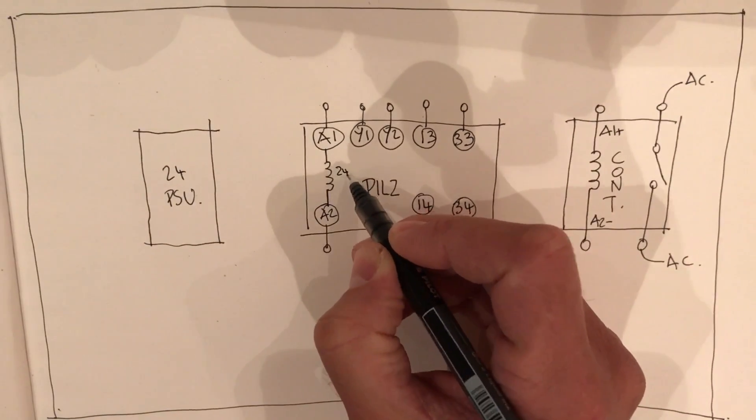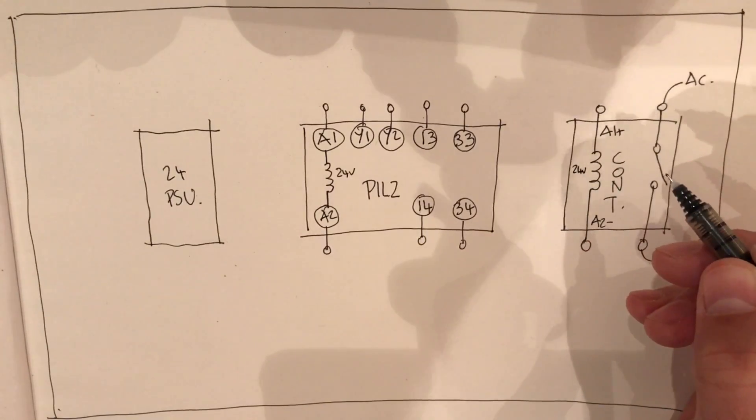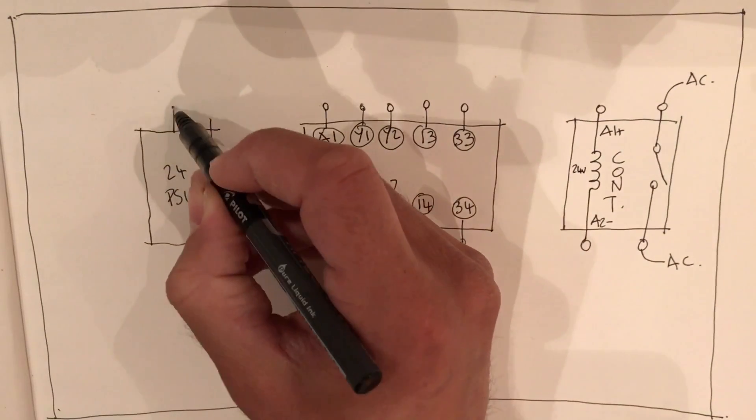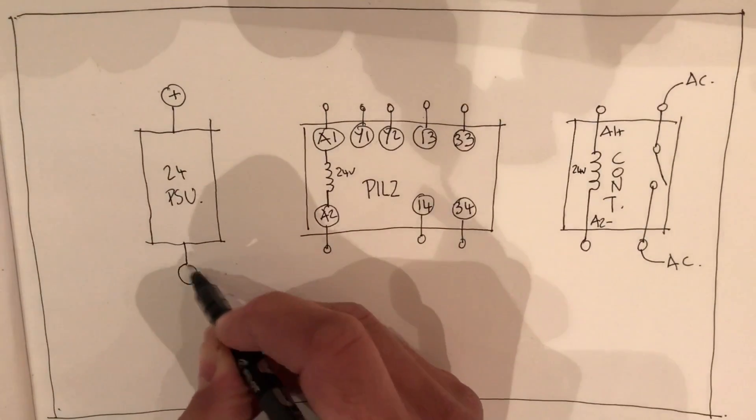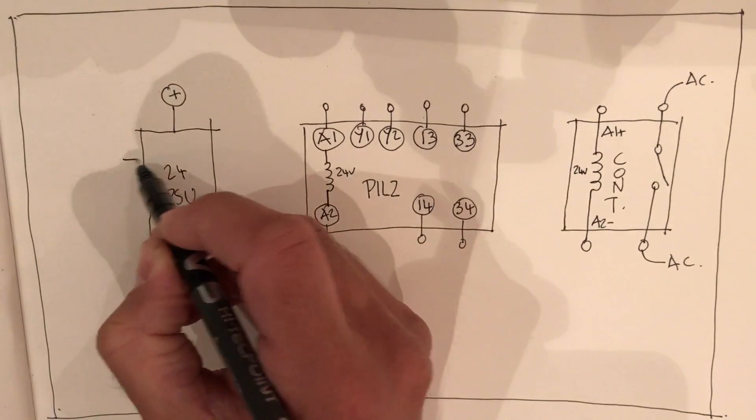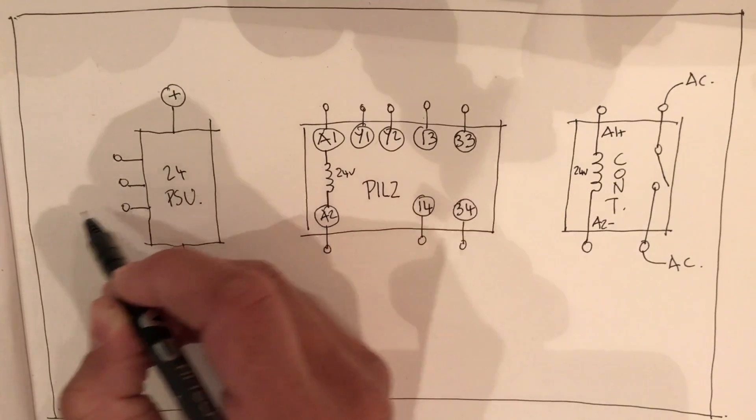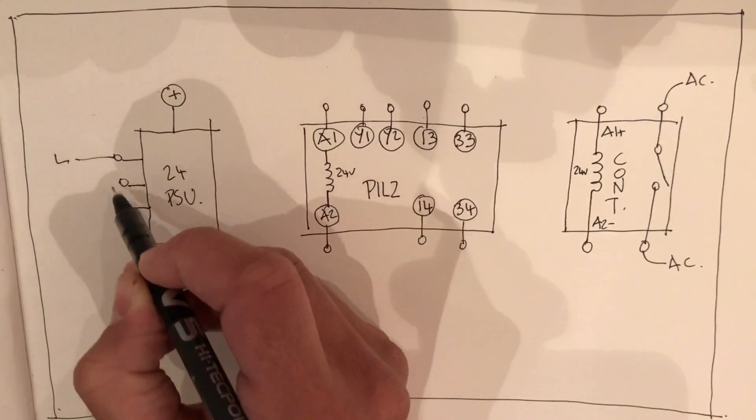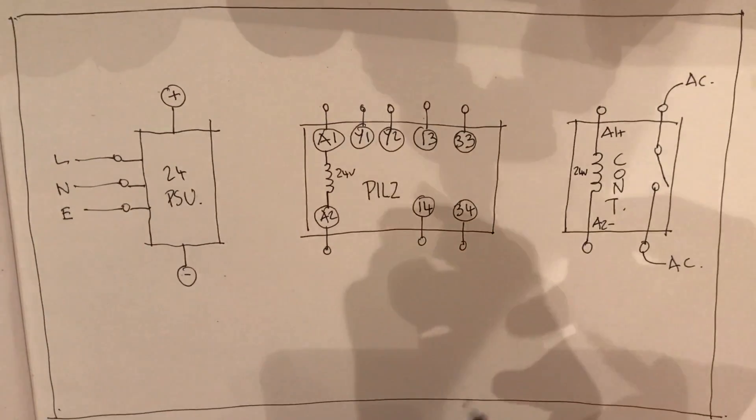Each of these is 24 volt coils, so the 24 volt power supply has a positive and negative terminal and obviously incoming line, neutral and earth connection.